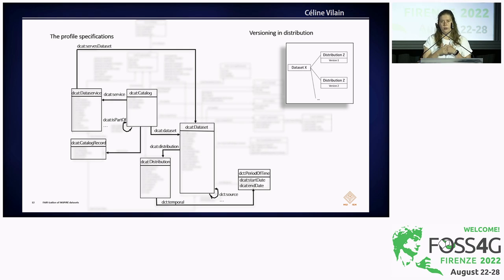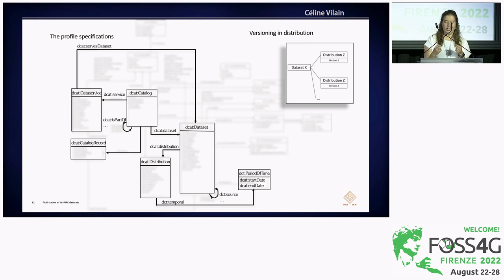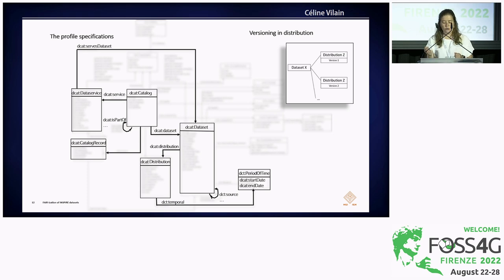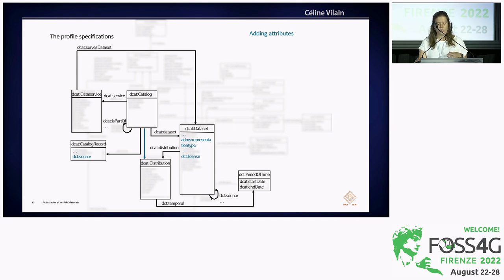We think it would be great to use versioning directly in distribution. When you want to version a new version of your dataset, you instantiate a new distribution class to be sure that your dataset always stays the same. If you want to speak about a new version, you only have to fill in the DCT temporal attribute. In our profile, we also added some attributes like the representation type and the license that are intrinsically related to the dataset in the perspective of INSPIRE.